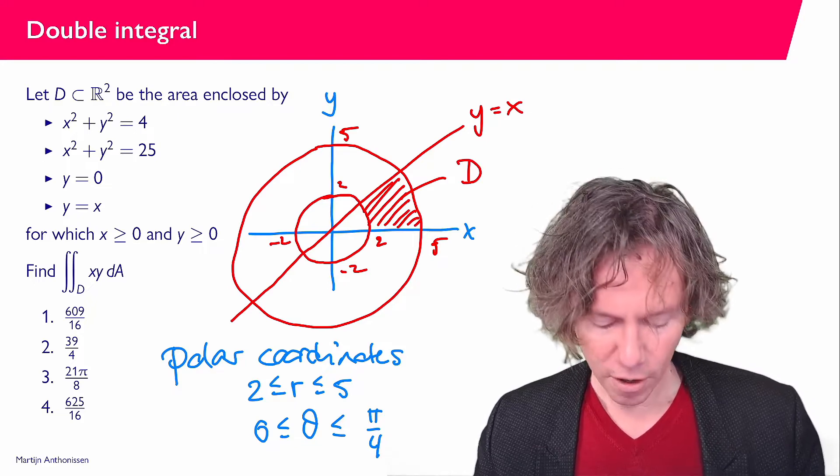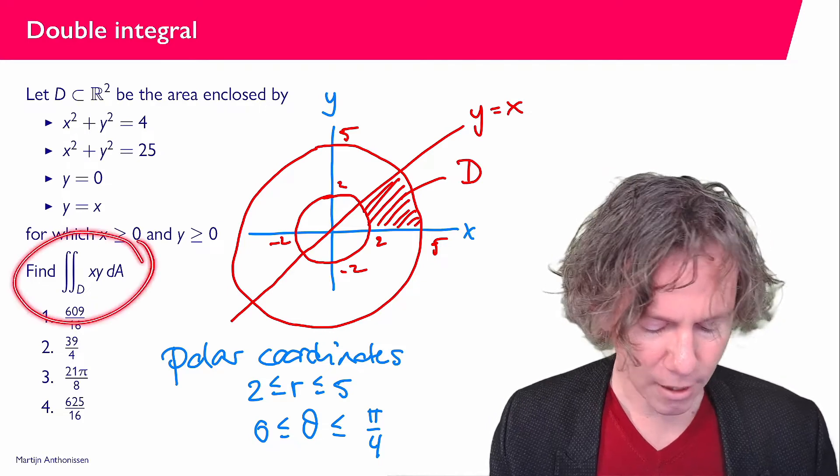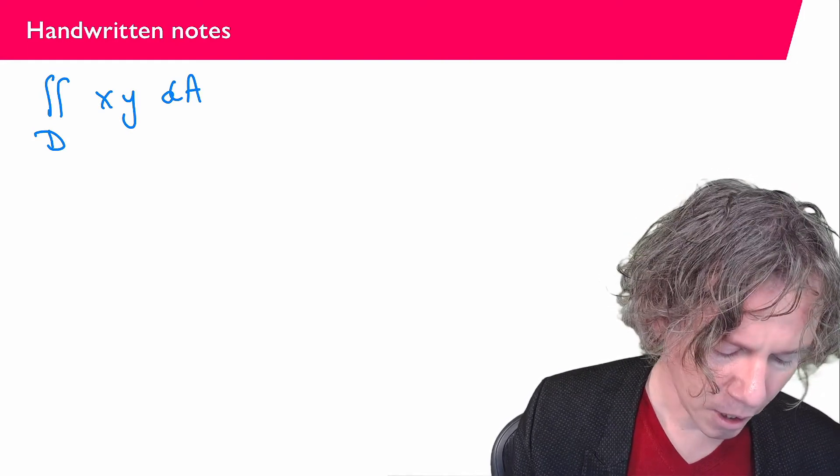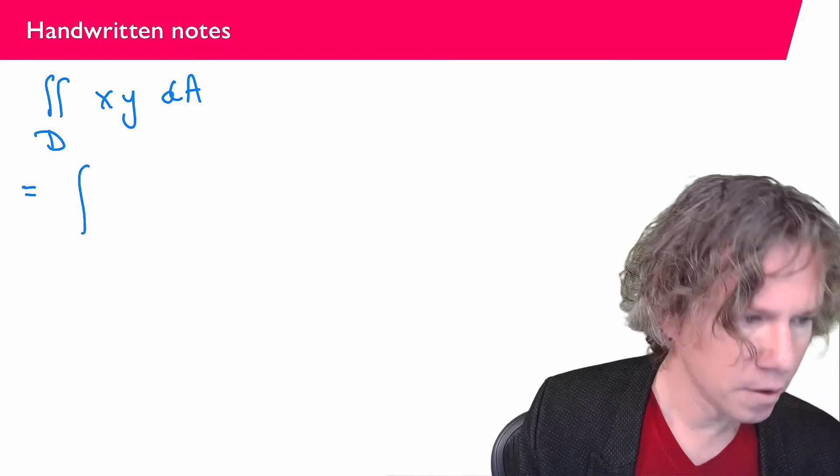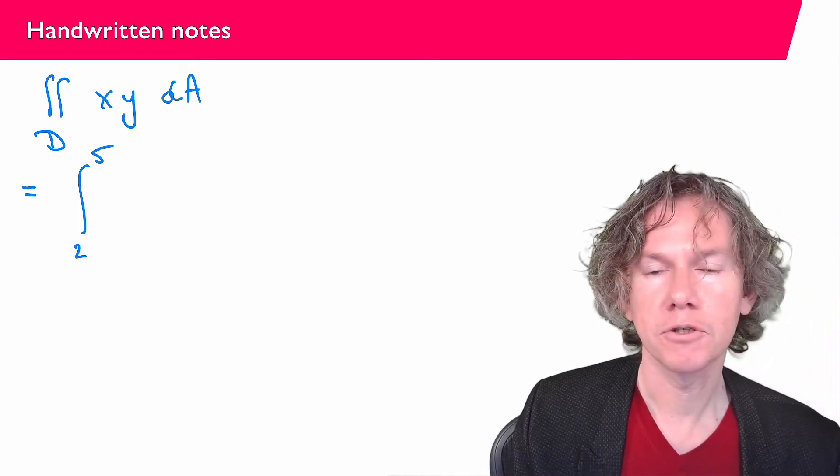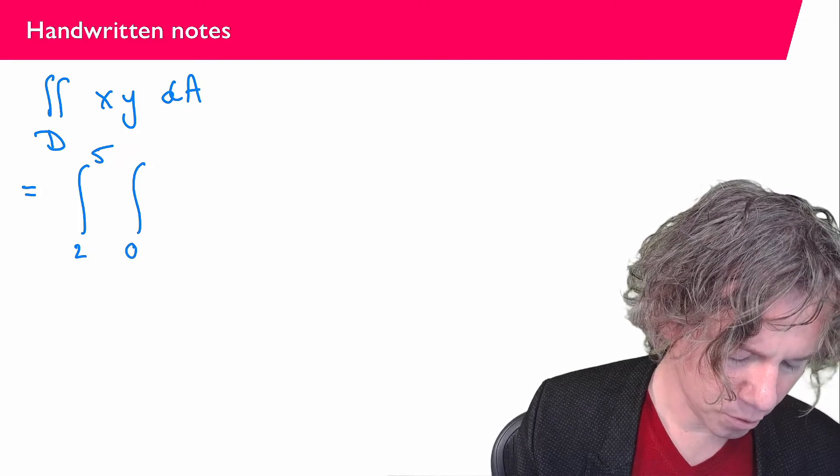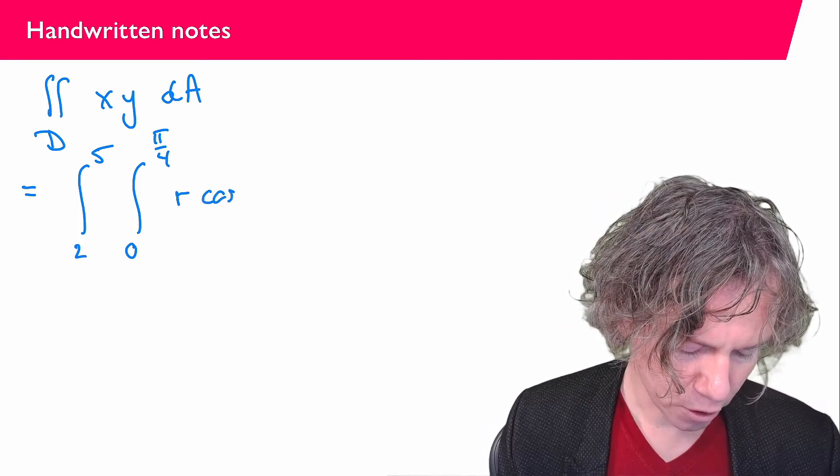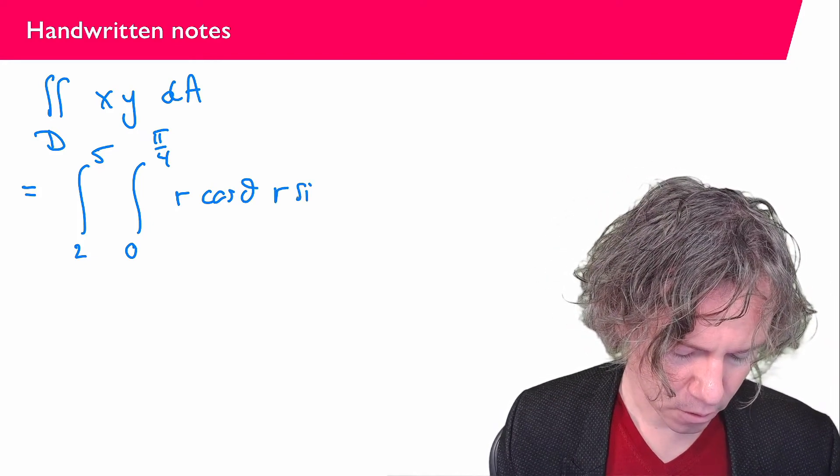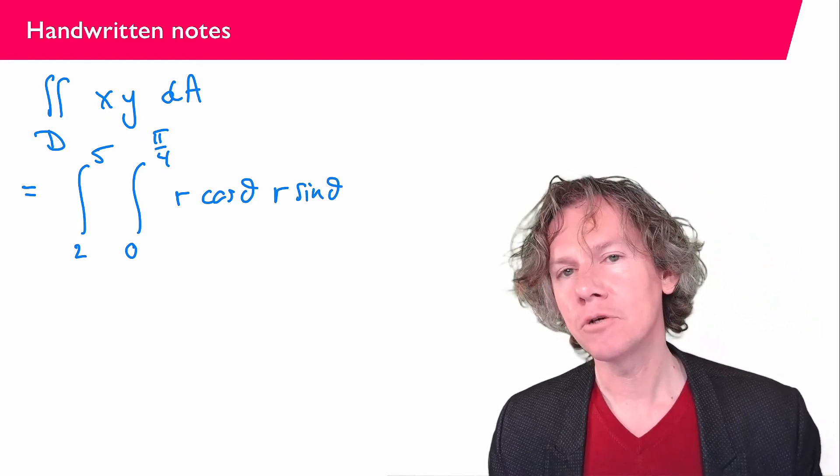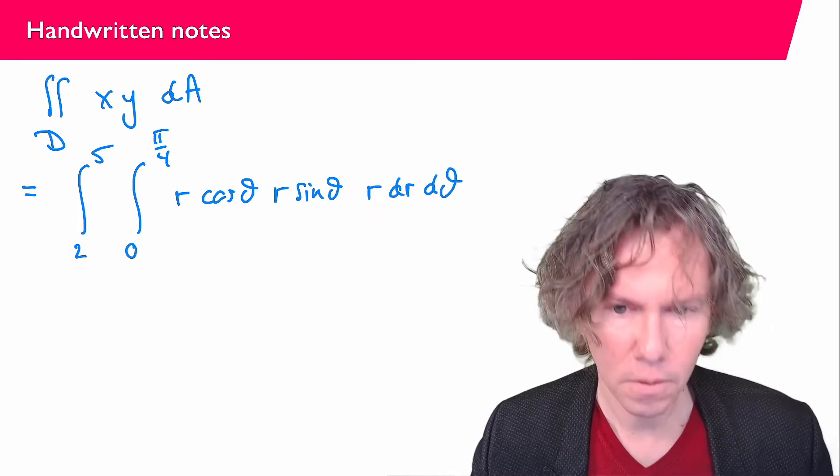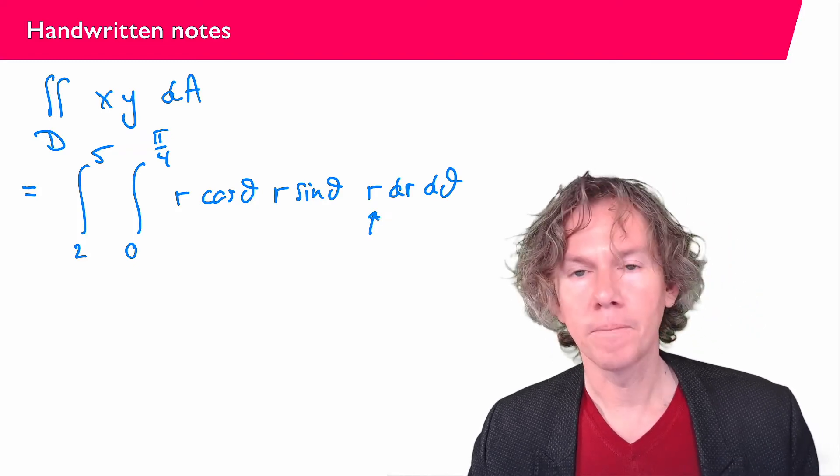So putting that all together we now have all the ingredients that we need to compute the integral we are being asked here. We are being asked to find the integral over D XY dA. And what we get is the integral from 2 to 5, and that's the r component, the integral from 0 to pi over 4. Now our X in polar coordinates is r times cosine theta, the Y gives us r sine theta, and then the dA, so the area element, is r dr dθ. So don't forget the extra r that you get there. And this one is due to using polar coordinates.